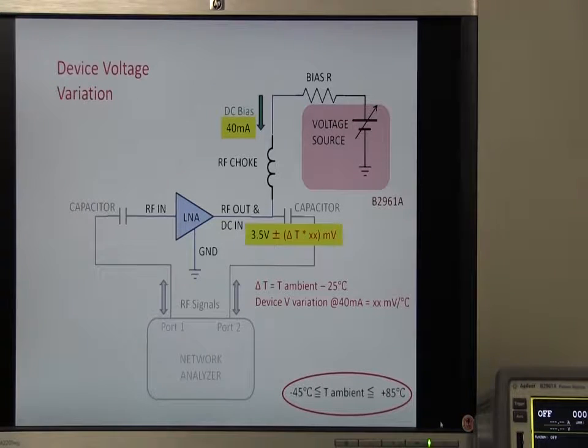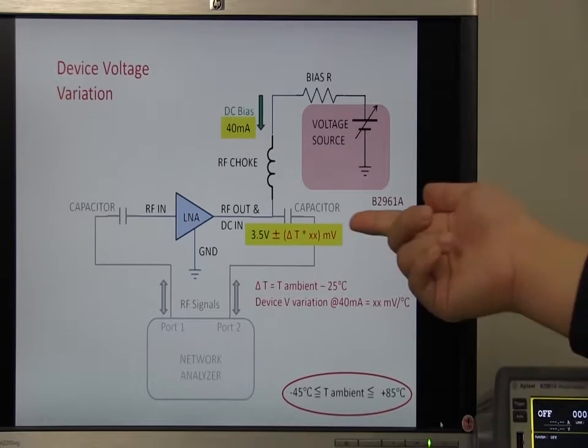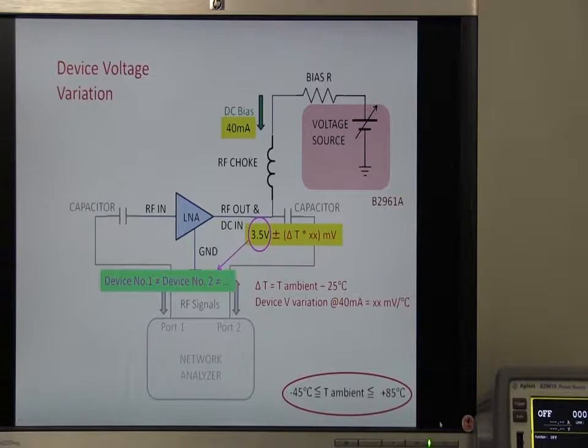The device voltage may change several millivolts per degree Celsius. Moreover, the device voltage varies slightly between units, so you have to adjust the bias voltage or bias resistor every time you change the device.